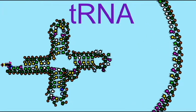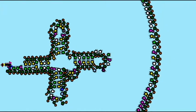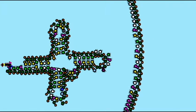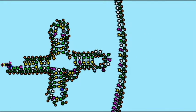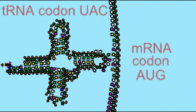If the mRNA codon was coding for the amino acid methionine — which is actually the starter amino acid, the first amino acid in protein translation — then the only tRNA which could match this codon would be one which has the anticodon of UAC, matching the mRNA codon of AUG. Thus, only the amino acid methionine would be inserted at this spot.